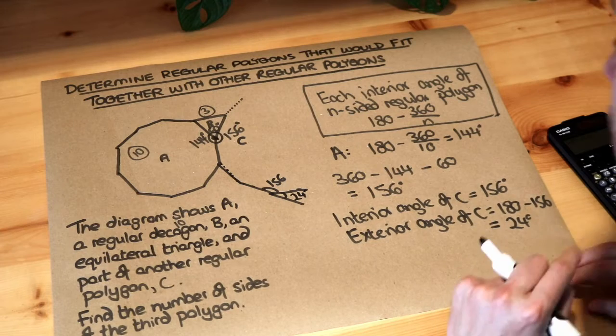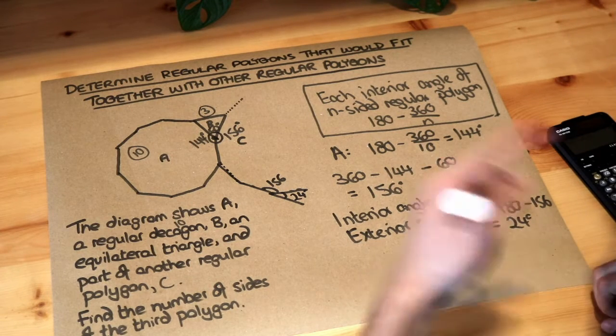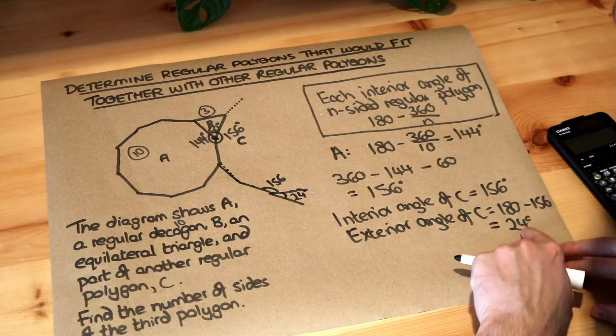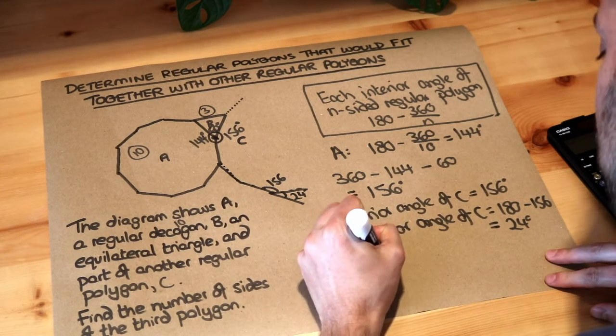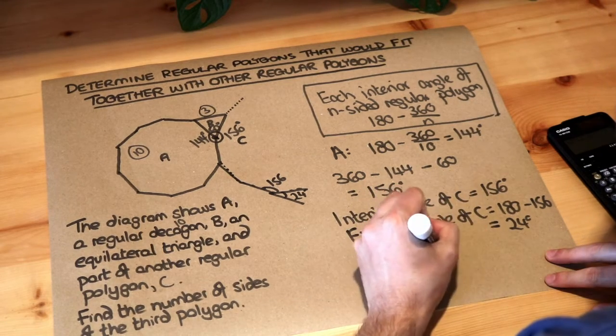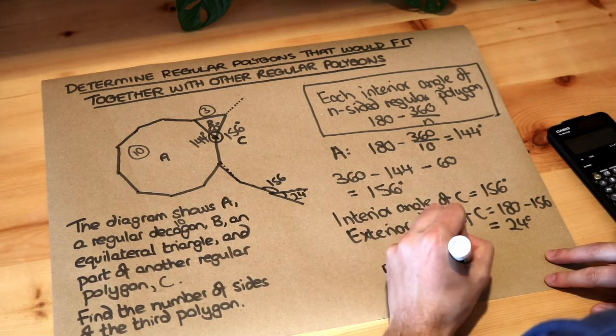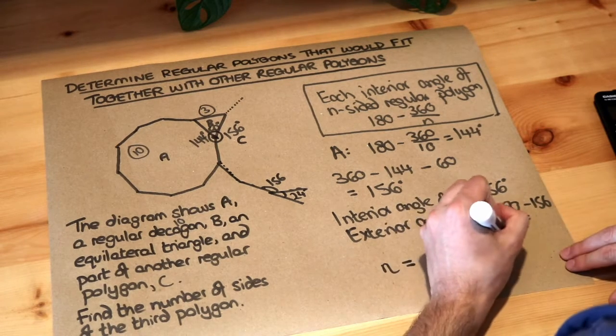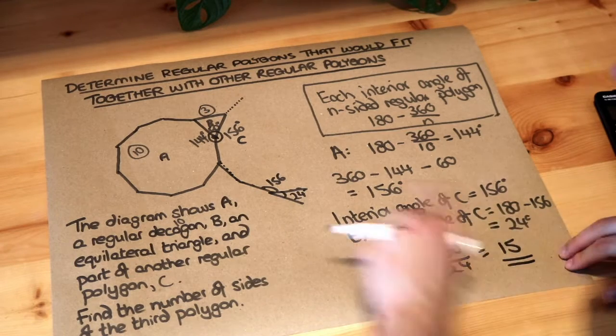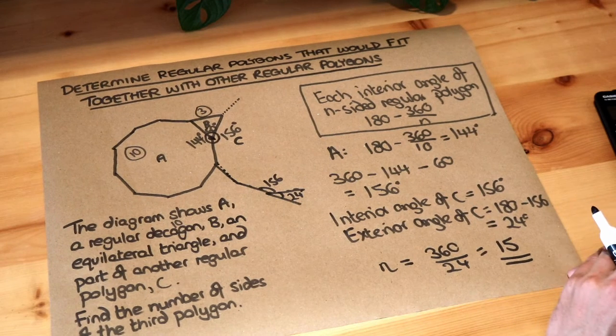And also remember the total exterior angle of any polygon is always 360 degrees. So we just got to see how many times 24 goes into 360. So the number of sides, let's call it N, is 360 divided by 24. I think that's 15, but let's just double check. Yes, it's 15. So it's therefore a 15-sided shape, and that's the final answer.